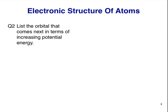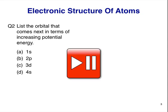Question 2. List the orbital that comes next in terms of increasing potential energy. The orbital closest to the nucleus has the lowest potential energy, and is the first one filled. The next one to be filled has a higher potential energy, and so on. These are the orbitals: 1s, 2p, 3d, 4s. Pause now, and write down your answer.